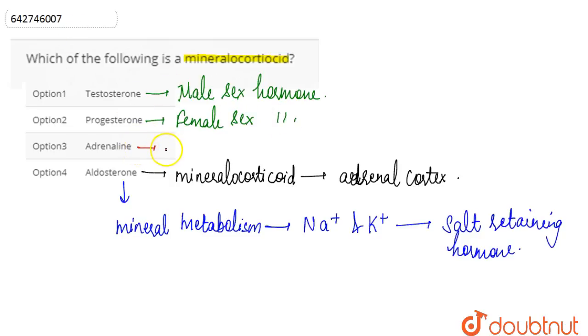Adrenaline is the hormone secreted by the adrenal gland, which is known as the emergency hormone. It basically prepares the body to cope up in stressful or emergency situations. So it also has nothing to do with the mineral balance of our body.